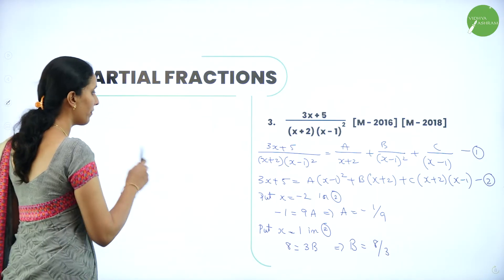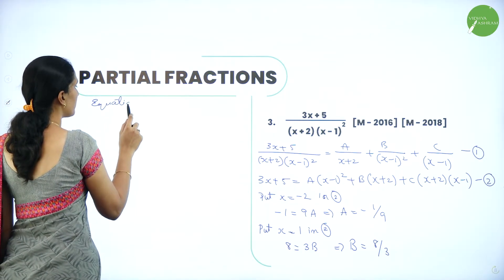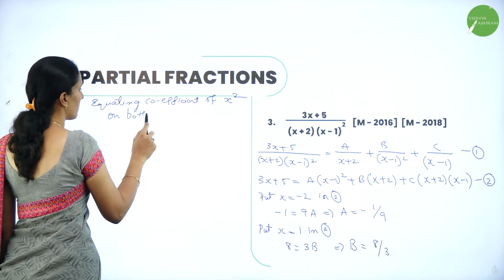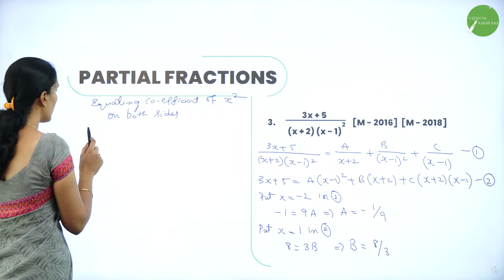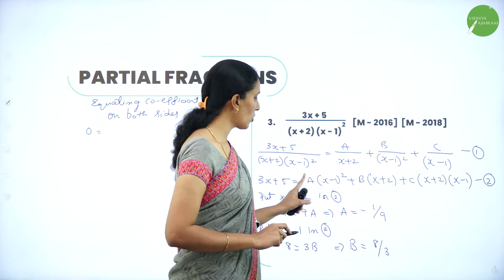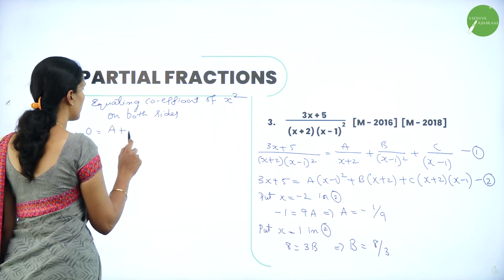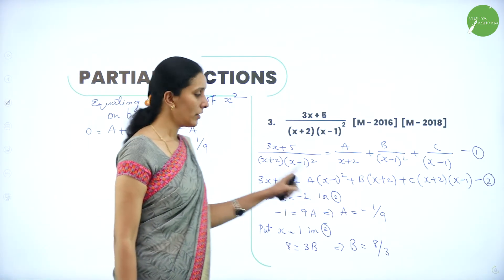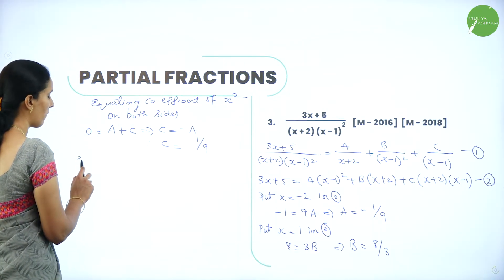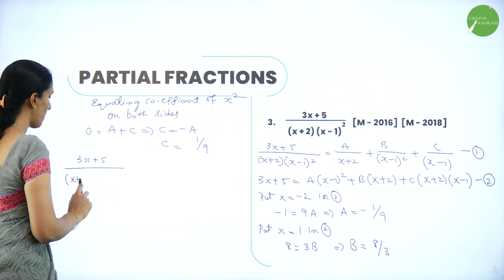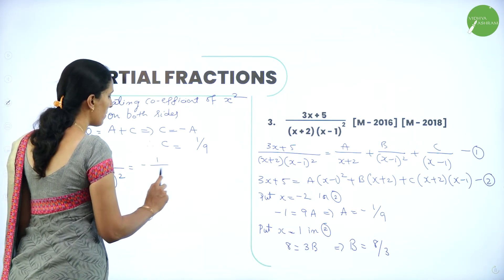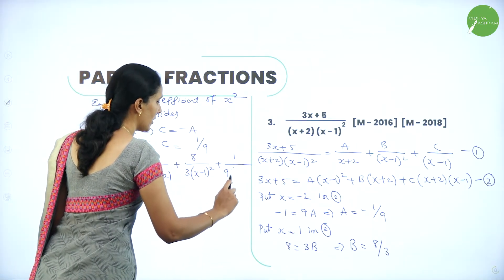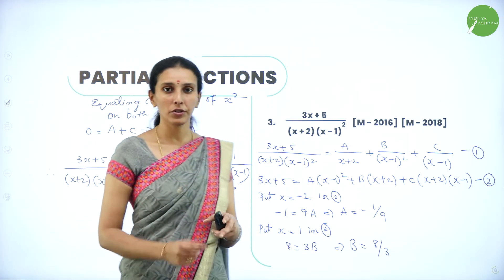Next, equating coefficients of x² on both sides: left-hand side has no x² term, so it is 0. On the right-hand side, the coefficients of x² come from A and C, giving A + C = 0, so C = −A = 1/9. Therefore, (3x+5)/[(x+2)(x−1)²] = −1/[9(x+2)] + 8/[3(x−1)²] + 1/[9(x−1)]. Hence we have resolved the given rational function into simple fractions.